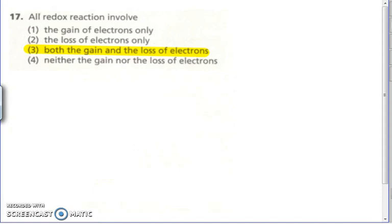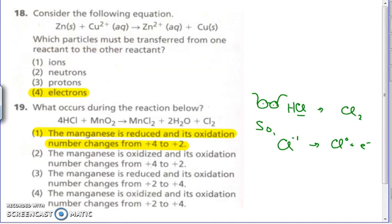Number 17 — all redox reactions involve both the gain and loss of electrons. You must have reduction and oxidation. Reduction is the gain of electrons; oxidation is loss of electrons. Number 18 — consider which particles are transferred. Again, we're talking about electrons.